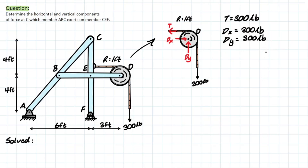Now we need to decide where to go next. We'll pick member BED first. We already know Dx and Dy, but we still need Cx and Cy. We first need to find the reactions at B or E. Since the pin reactions transfer equally and oppositely to connected members, solving BED first lets us tackle both B and E simultaneously.